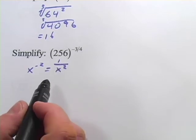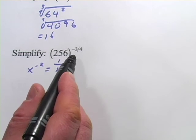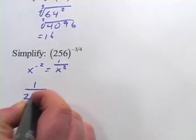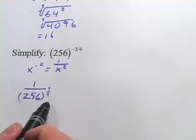Let's try this one, 256 to the negative 3/4. What I'm going to do first is just do the negative sign. So we're going to rewrite this as 1 over 256 to the positive 3/4. So I've dealt with the negative sign.